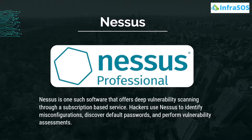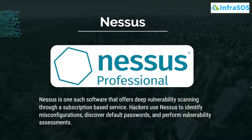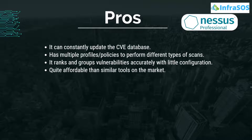Number five on our list is Nessus. Nessus is software that offers deep vulnerability scanning through a subscription-based service. Hackers use Nessus to identify misconfiguration, discover default passwords, and perform vulnerability assessment. Pros of Nessus include that it constantly updates the CVE database, has multiple profiles and policies to perform different types of scans, and ranks and groups vulnerabilities accurately with minimal configuration.